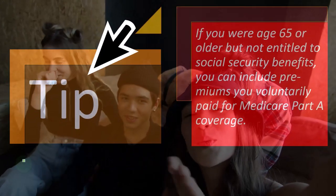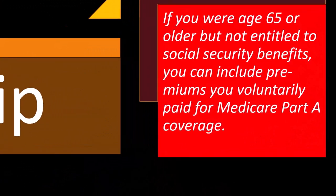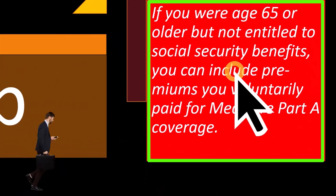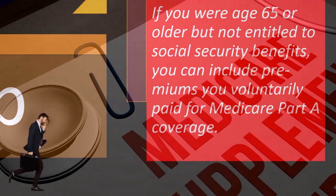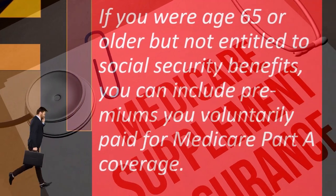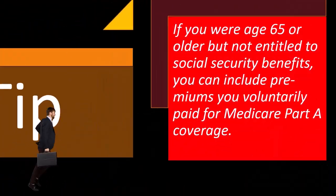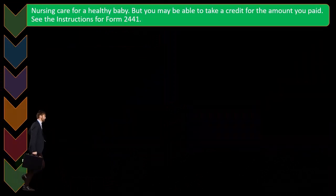However, if you are age 65 or older but not entitled to Social Security benefits, you can include premiums you voluntarily paid for Medicare Part A coverage. So there could be different components of the Medicare coverage, some of which you might be able to include.